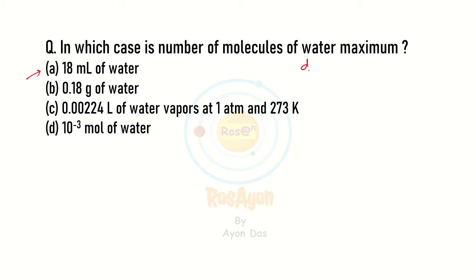We know the density of water equals 1 gram per mL. Now if you calculate the mass of 18 mL water, that equals 18 grams of water because we know the mass equals volume into density.